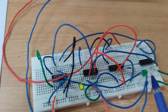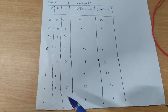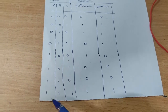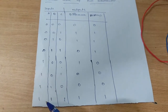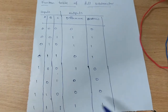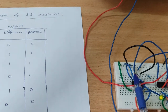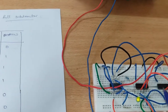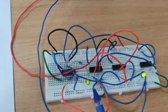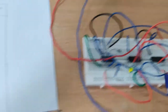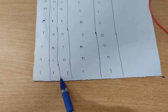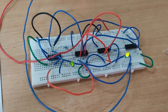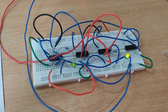Now the last combination: inputs are A=1, B=1, C=1. Here A, B, C connections are all given to supply, meaning all inputs are 1. Both LEDs are on — outputs are 1, 1. So when all inputs are ones, both outputs difference and borrow are 1, 1. Thank you.